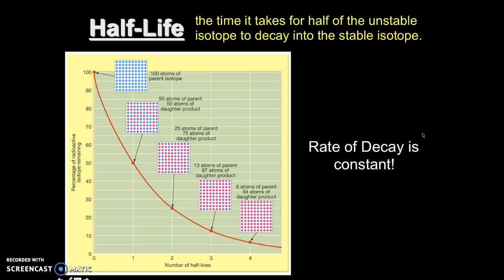When we start to look at the decay processes, we often hear the word half-life. Half-life is the time it takes for half of the unstable isotope to decay into the stable isotope. The rate of decay of all isotopes is constant. What we're looking at here is a graph that shows the unstable atoms decaying over time. We're looking at the very beginning, we have the sample is contained of 100% of the parent atom.